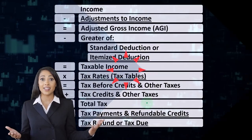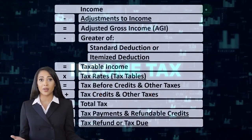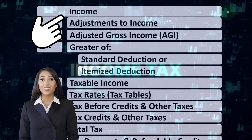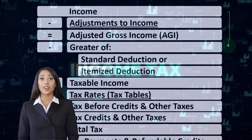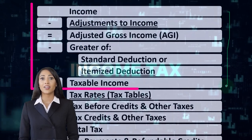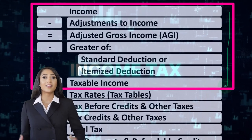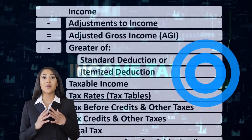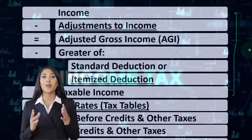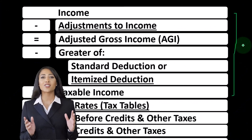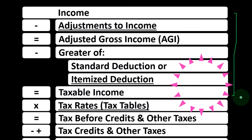Looking at the income tax formula, we're focused on line one, that being income. The first half of the income tax formula is, in essence, an income statement — although a strange one — where we have income up top, the equivalent of expenses being the deductions, getting us down to the equivalent of net income.